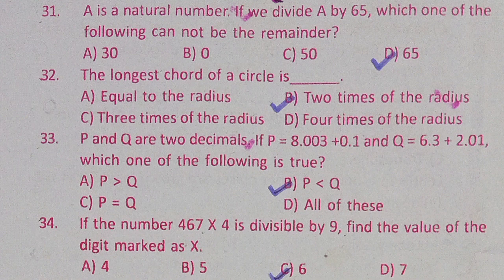Question 33: P and Q are two decimals. If P = 8.003 + 0.1 and Q = 6.3 + 2.01, which of the following is true? Option A: P is greater than Q, Option B: P is smaller than Q, Option C: P and Q are equal, Option D: all of these. The correct answer is Option B: P is smaller than Q.